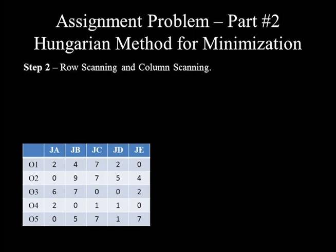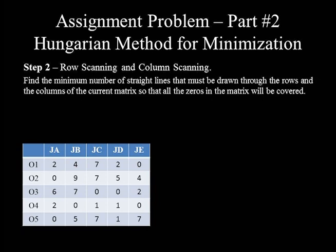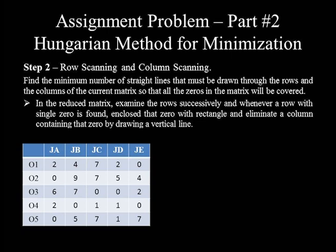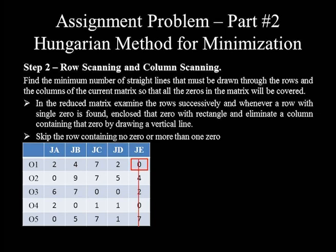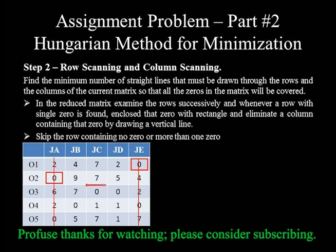Step 2: row scanning and column scanning. We find the minimum number of straight lines through rows and columns of the current matrix so that all zeros are covered. First, examine rows successively; whenever a row with a single zero is found, enclose that zero in a rectangle and eliminate the column containing it with a vertical line. Skip rows with more than one zero. Row 1 has one zero (under column 5), so we enclose it and eliminate column 5. Row 2 has one zero (under column 1), so we enclose it and eliminate column 1. Row 3 has two zeros, so we skip it.